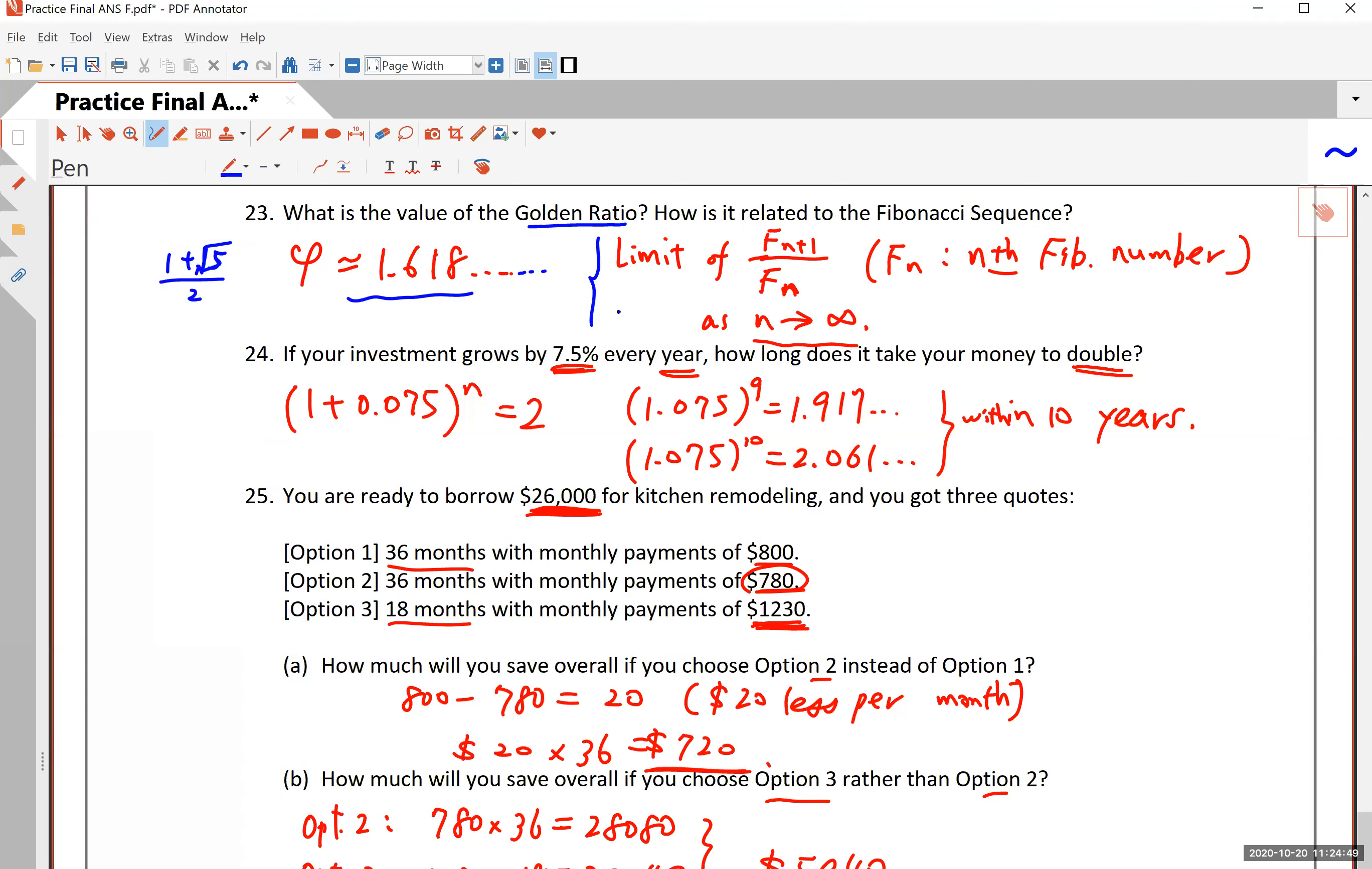as we talked about before test number three, it is the limit of the two consecutive Fibonacci numbers as N approaches infinity. You remember your Fibonacci numbers that starts with one and one, and then the following numbers are the sum of the two previous numbers: 1, 1, 2, 3, 5, 8, 13, 21, and so on. If you divide a Fibonacci number by the previous number, that ratio of two consecutive Fibonacci numbers approaches the golden ratio.